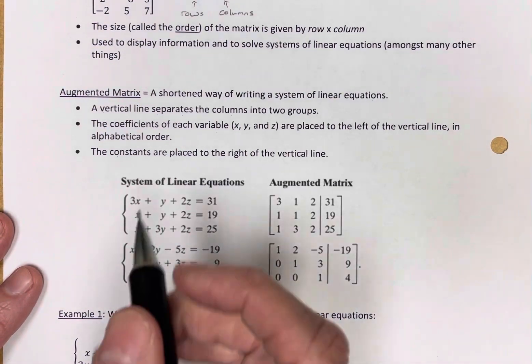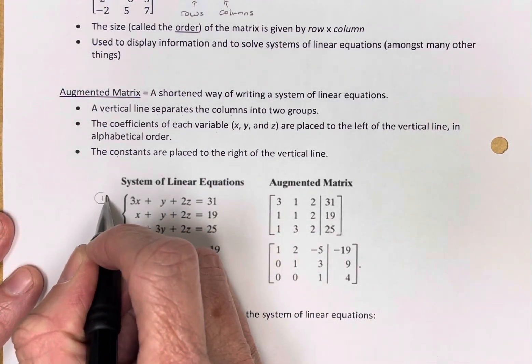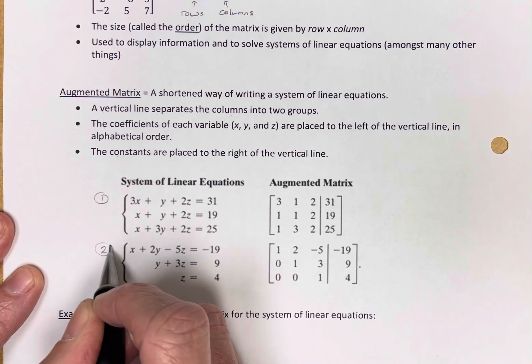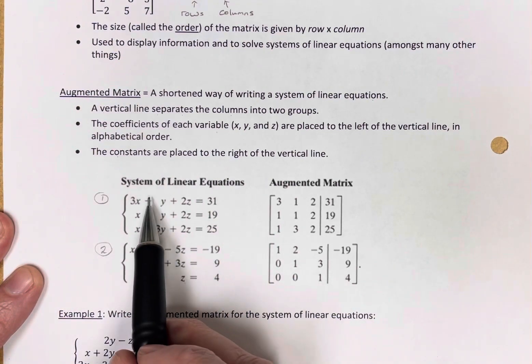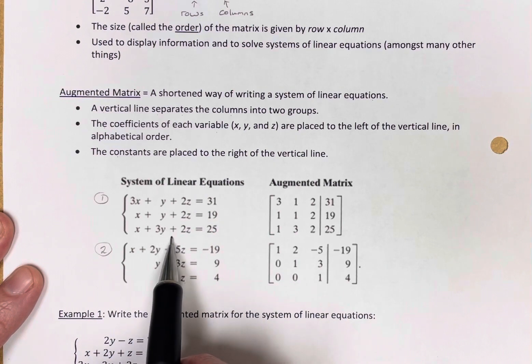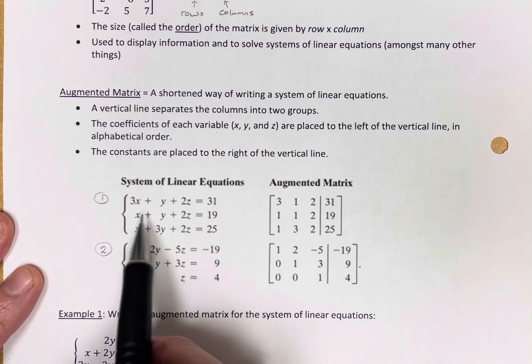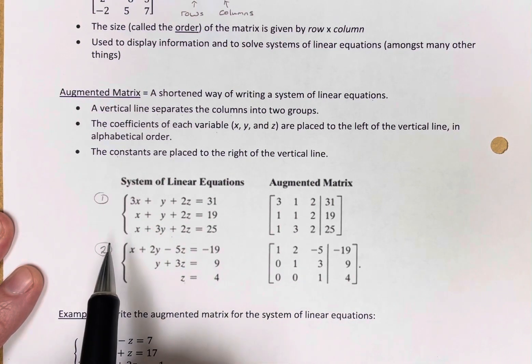Here are two examples. I'll put a one here and a two here. Example one, we have a system of linear equations in three variables. Here are three linear equations.